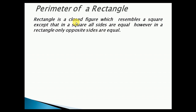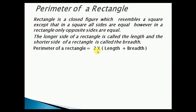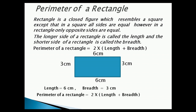Perimeter of a rectangle. A rectangle is a closed figure which resembles a square, except that in a square all sides are equal. However, in a rectangle, only opposite sides are equal. The longer side of a rectangle is called the length and the shorter side is called the breadth. Perimeter of a rectangle is equal to 2 into length plus breadth. This is a rectangle — this is length and this is breadth. To find the perimeter of a rectangle having length 6 cm and breadth 3 cm: perimeter equals 2 into 6 plus 3, equals 2 into 9, equals 18 cm.